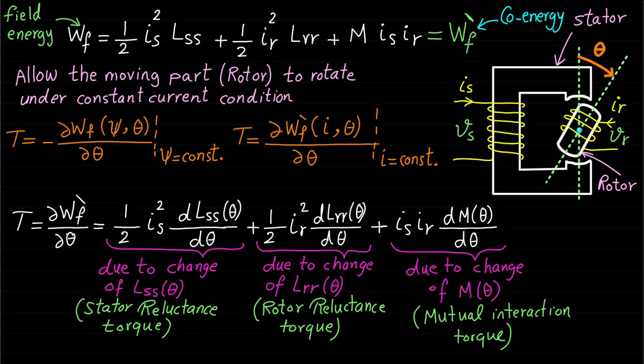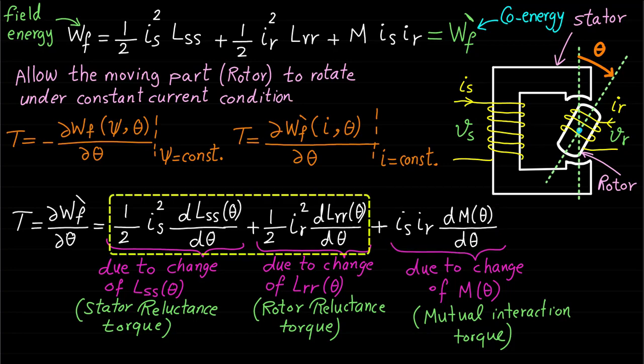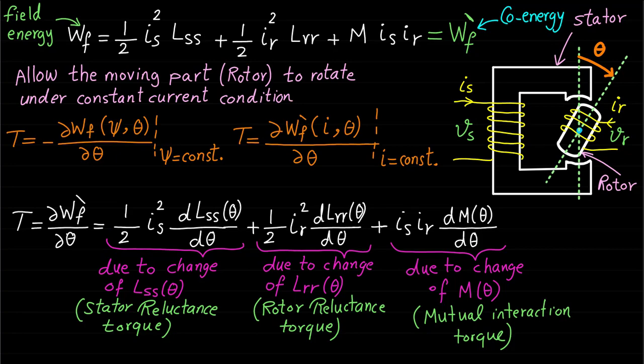The mutual torque component is generated in almost all industrial electrical machines, while the self-inductance torque component can be available in some machines. Basically, the geometry of the machine or the magnetic circuit determines the available torque components in the magnetic system.